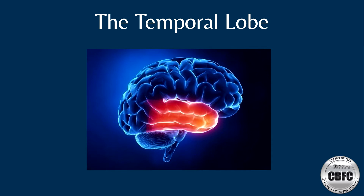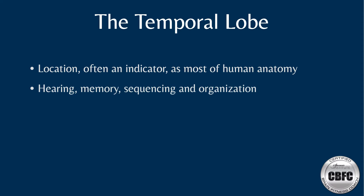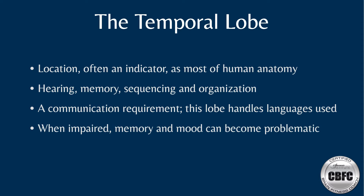The temporal lobe is located at the temple and behind the ear. It is involved in hearing, memory, sequencing, and organization, and allows us to have an understanding of the languages we use for communication. Those with mood and memory issues often have impaired functioning in the temporal lobes.